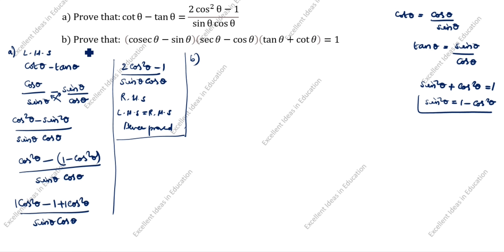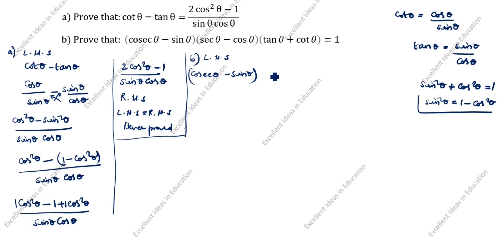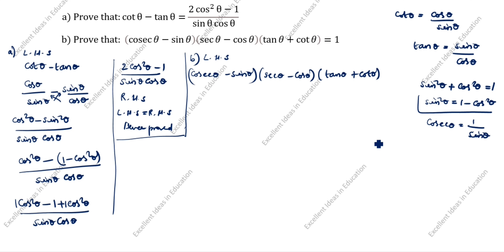Next question B. What is given? Prove that open bracket cosec θ minus sin θ, close bracket, open bracket sec θ minus cos θ, close bracket, open bracket tan θ plus cot θ, close bracket equals 1. We will prove LHS equal to RHS. LHS is: cosec θ minus sin θ, next sec θ minus cos θ, next tan θ plus cot θ. Now, cosec θ equals 1 by sin θ, and sec θ equals 1 by cos θ.